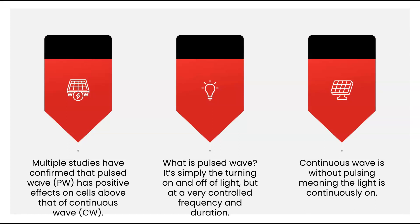By frequency, we mean how frequent does the light turn on and off per second. This can generally range from 1 to 10,000. Duration means when the light flashes on, how long does it last, which can be from half a second before it turns off up to billionths of a second. Continuous wave or non-pulsed is simply when the light is always on, just like your at-home light bulb.